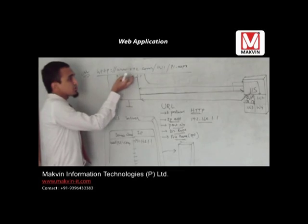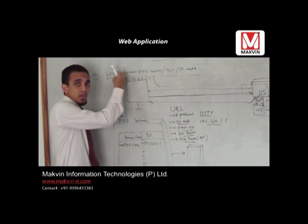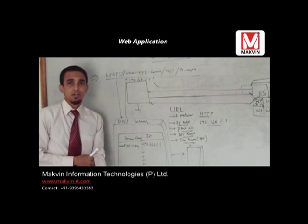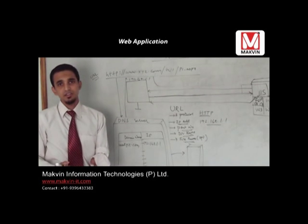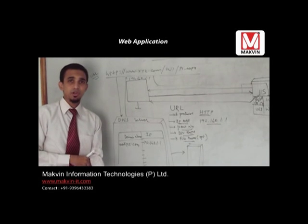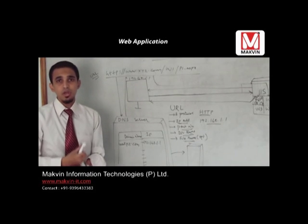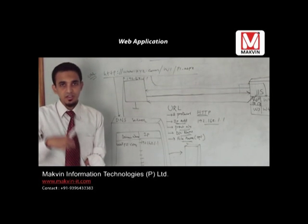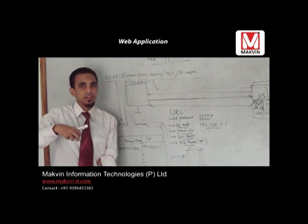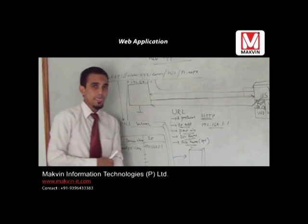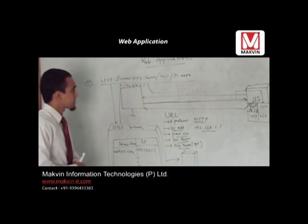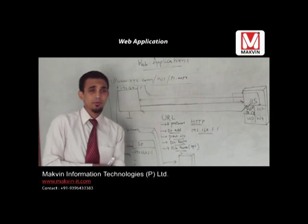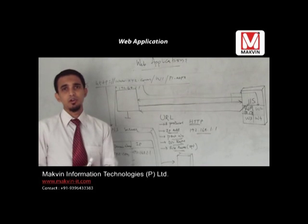On the second hit, it stores the IP address of this domain name in the cache or in the memory of the client system. So for the second hit, it is a little faster compared to the first hit, because it tries to search the IP address of this domain name in the cache itself. If found there, it takes the IP address and makes the request to the server. So we simply write www.gmail.com, www.google.com, or any domain.